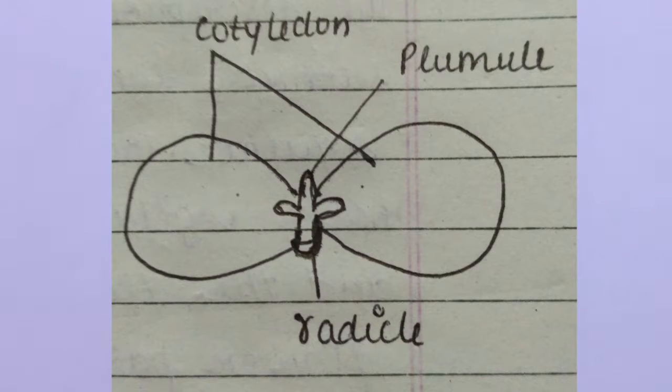In castor, the endosperm forms as a result of double fertilization and is a food storing tissue. If the endosperm is not present in mature seed, it is called non-endospermous seed.